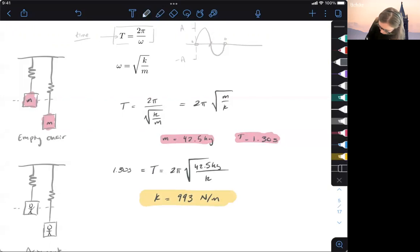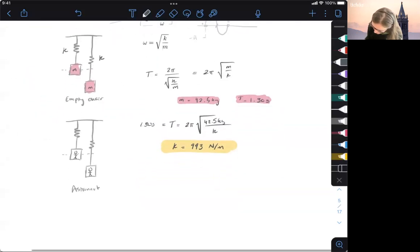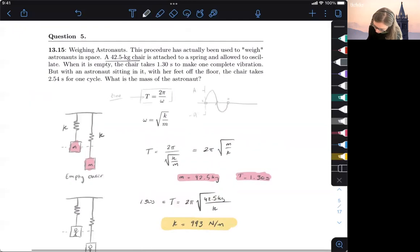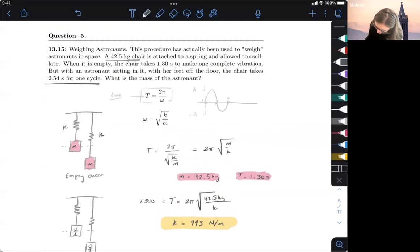And that's our K for this spring, that's how much it's going to push and resist motion. So that's going to help us solve for the mass of the person. So now let's do this equation again. We know that T equals 2π times the square root of M over K. So for the second one,